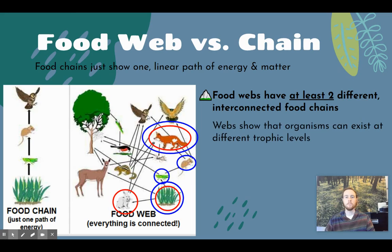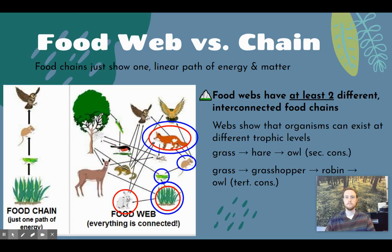Food webs are helpful for visualizing how organisms can occupy two different trophic levels. For example, the owl is a secondary consumer if it's consuming the rabbit, because the rabbit is a primary consumer that ate the grass. But the owl is a tertiary consumer if it's eating a robin, because the robin — a secondary consumer — ate a grasshopper, a primary consumer, which ate the grass, a producer. So organisms can occupy different trophic levels within the food web.